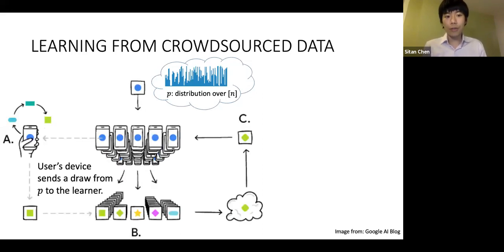We as the server obtain data from users' devices, so every user is going to send a draw from this underlying distribution p, and I'm going to aggregate this user data and attempt to learn p.